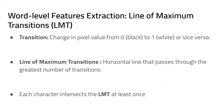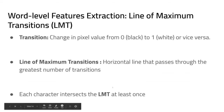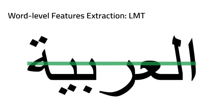The second feature was the line of maximum transitions, or LMT. A transition is any change in pixel value from black to white or white to black. The LMT is the row of pixels with the greatest number of these transitions. Each intersection with the LMT identifies a new character or part of the same character — each character intersects the LMT at least once, except some like the 'Ta' which intersects it twice.